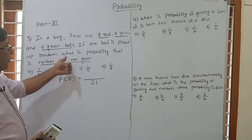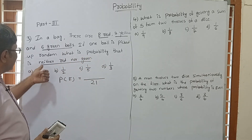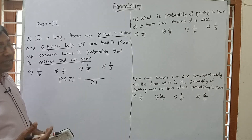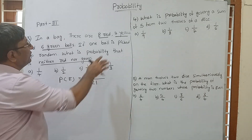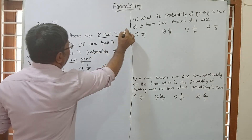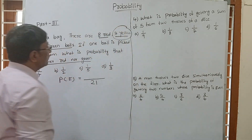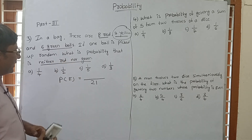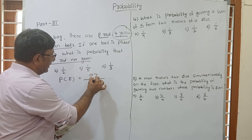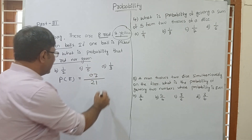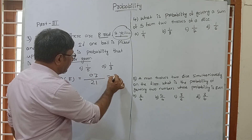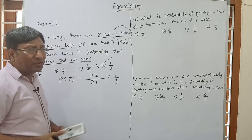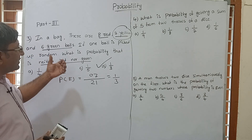Total outcome is 21. We need the probability that the ball is neither red nor green. So we leave out red and green, and we are left with only 7 yellow balls. Probability of neither red nor green is 7 upon 21.